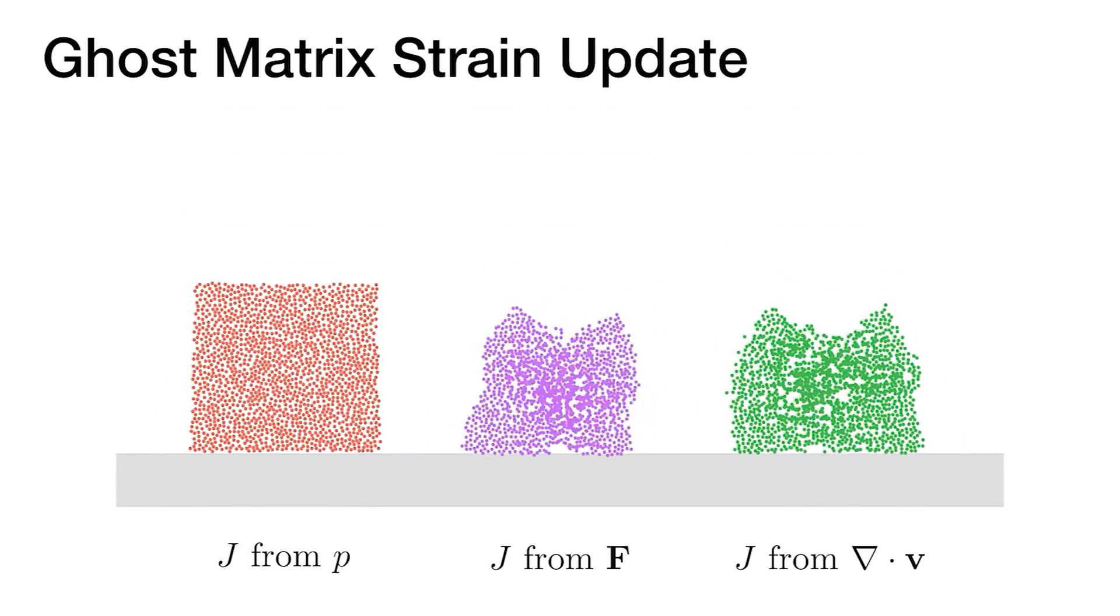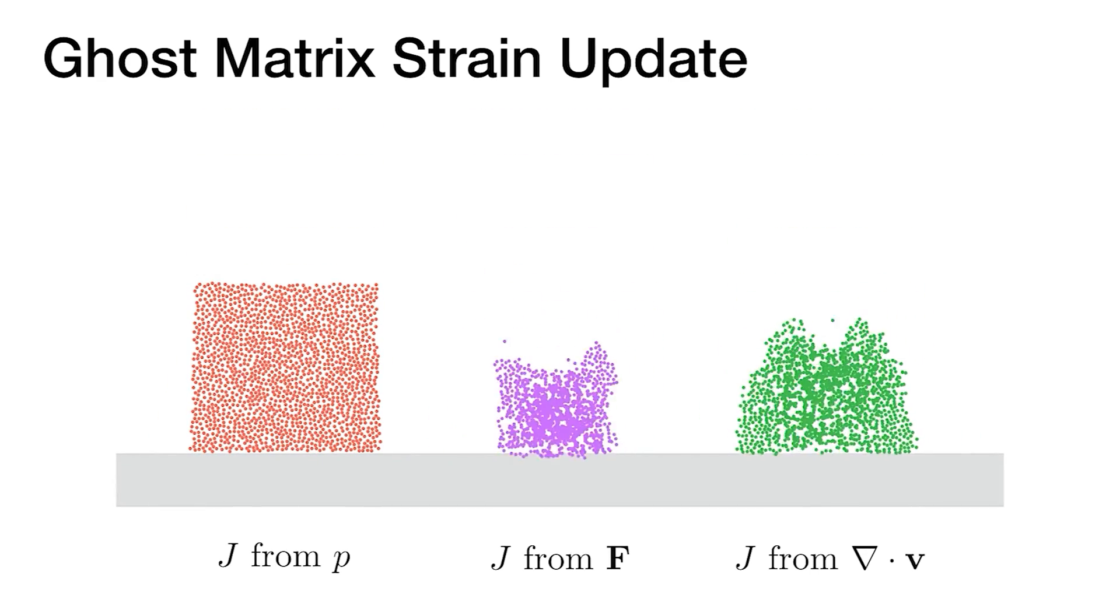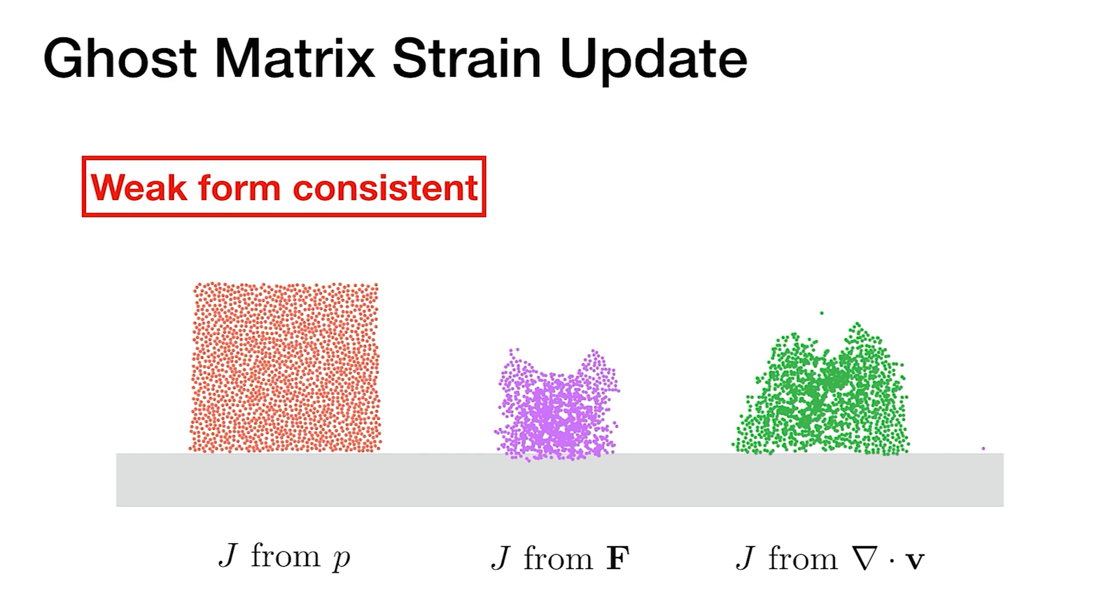In practice, our discretization scheme updates ghost coating strain J from the constantly interpolated pressure. This approach is consistent with the Q2-Q0 weak form discretization, and thus prevents instability.